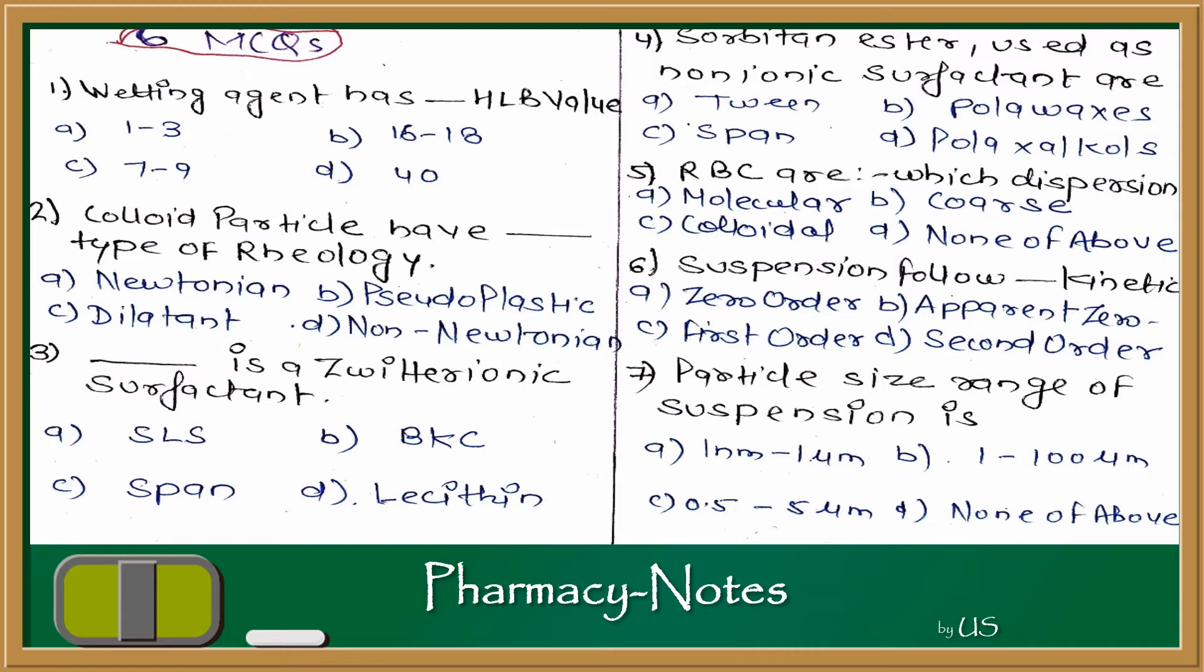You learn three things: Pseudoplastic, Plastic and Dilatant - that is the non-Newtonian category. So the Colloidal Particle is a non-Newtonian type of flow, which doesn't depend on Newton's law. So this is non-Newtonian flow.